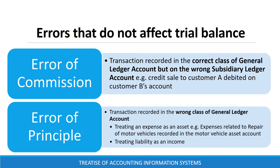Error of commission occurs when a transaction is recorded in the correct class of general ledger account but on the wrong subsidiary ledger account. For instance, a credit sale to customer A is debited to customer B's account. Error of principle occurs when a transaction is recorded in the wrong class of general ledger accounts — for instance, treating an expense as an asset, or treating a liability as an income.